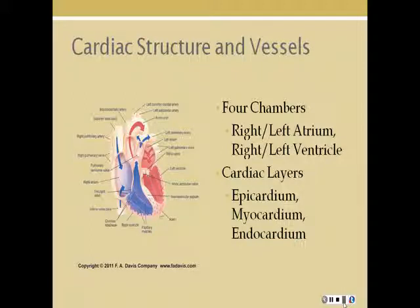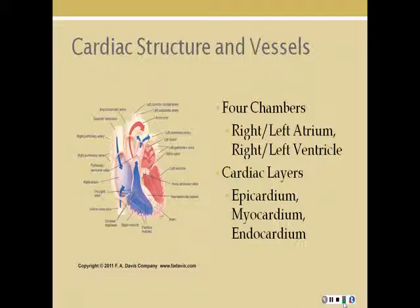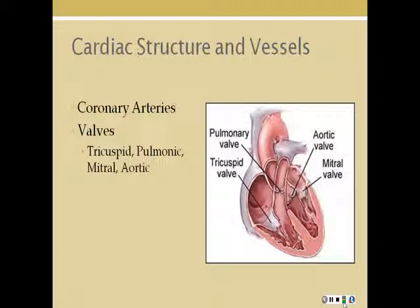There are different cardiac layers: the epicardium is the outermost layer of the heart tissue, also the innermost layer of the pericardium, or the visceral pericardium. The myocardium is cardiac muscle, and the endocardium is smooth epithelial tissue that lines the myocardium. The coronary arteries circulate blood throughout the myocardium. Valves — tricuspid, pulmonic, mitral, and aortic — are located between the atria and ventricles and in the pulmonary arteries and aorta, and these prevent backflow.